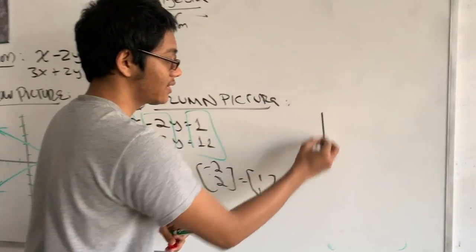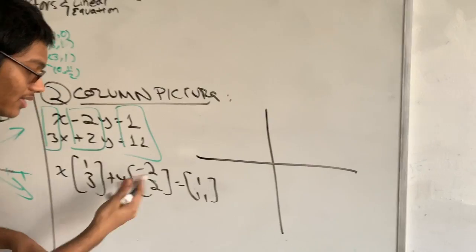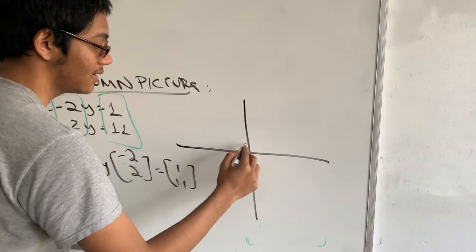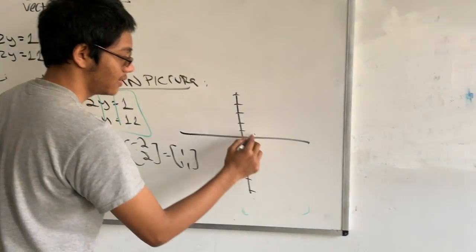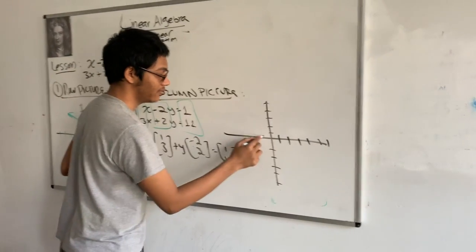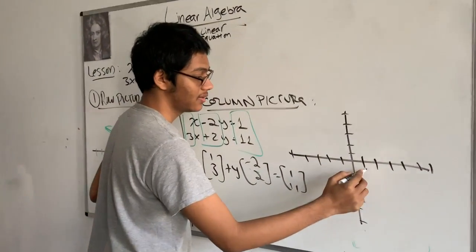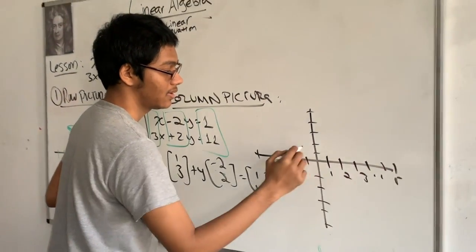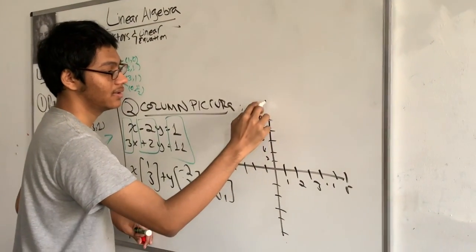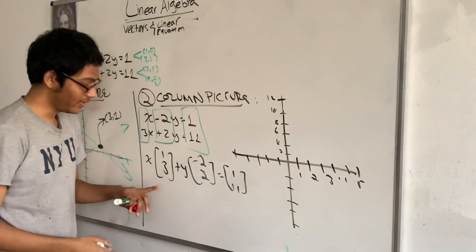So if you want to understand what's happening graphically, we can graph this up. So you can see I'll have to scale this by 2s. 1, 2, 3, 4, 5; 1, 2, 3, 4, 5; 2, 4, 6, 8, 10, 12.